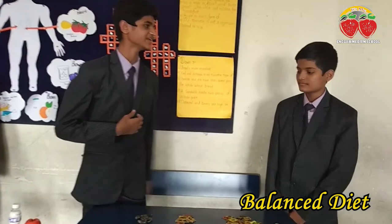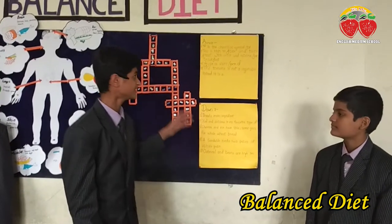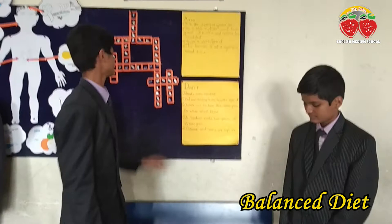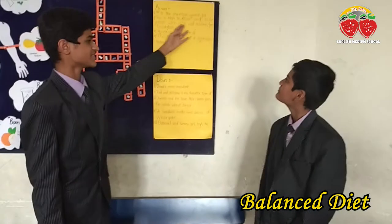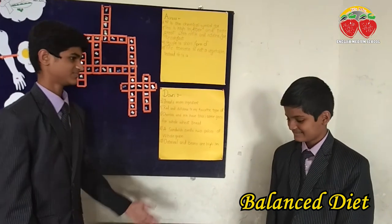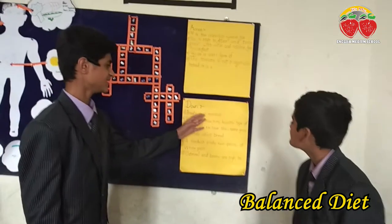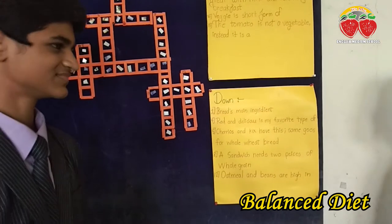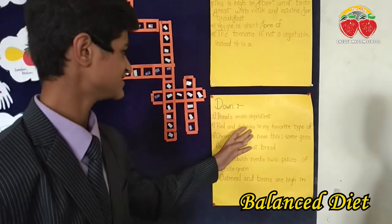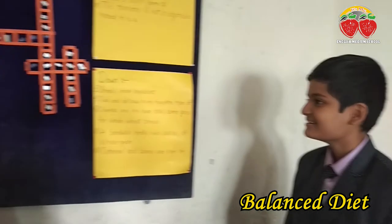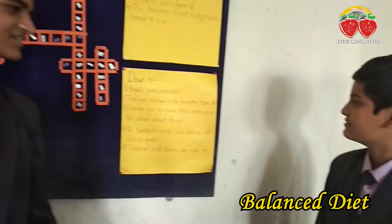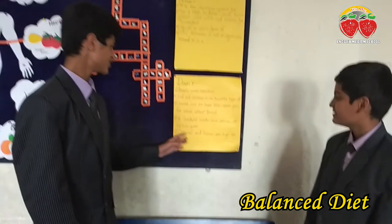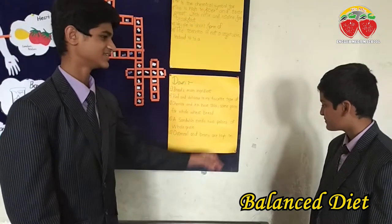Now we are going to play our game about balanced diet. I will ask him questions and he will answer. H2O is the chemical symbol for? Water. Bread's main ingredient? Sweet. Red and delicious is my favorite type of? Apple. Yes! Oatmeal and beans are high in? Protein. Yes! Thank you.